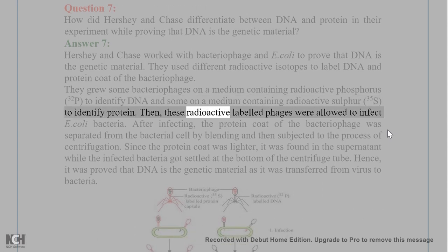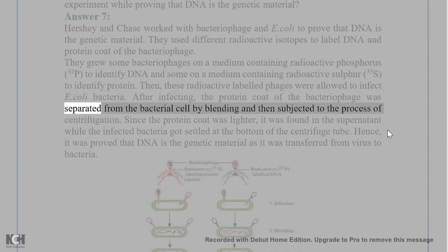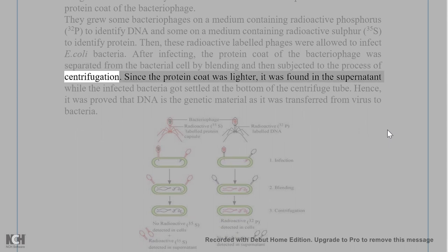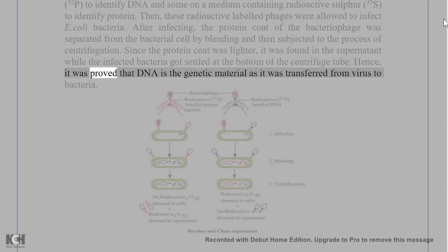These radioactive labeled phages were allowed to infect E. coli bacteria. After infecting, the protein coat of the bacteriophage was separated from the bacterial cell by blending and then subjected to centrifugation. Since the protein coat was lighter, it was found in the supernatant while the infected bacteria settled at the bottom of the centrifuge tube. Hence, it was proved that DNA is the genetic material as it was transferred from virus to bacteria.